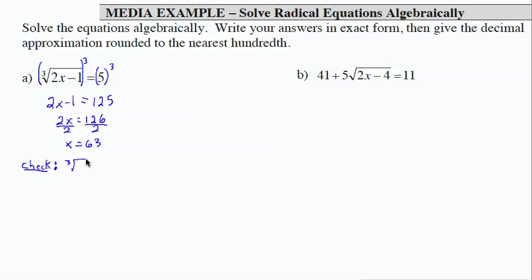So what we're checking is that when we plug in 63 into the left-hand side, that we get 5. So I have the cube root of 2 times 63 minus 1. That is the cube root of 126 minus 1, which is the cube root of 125. And cube root of 125 is 5, which checks.